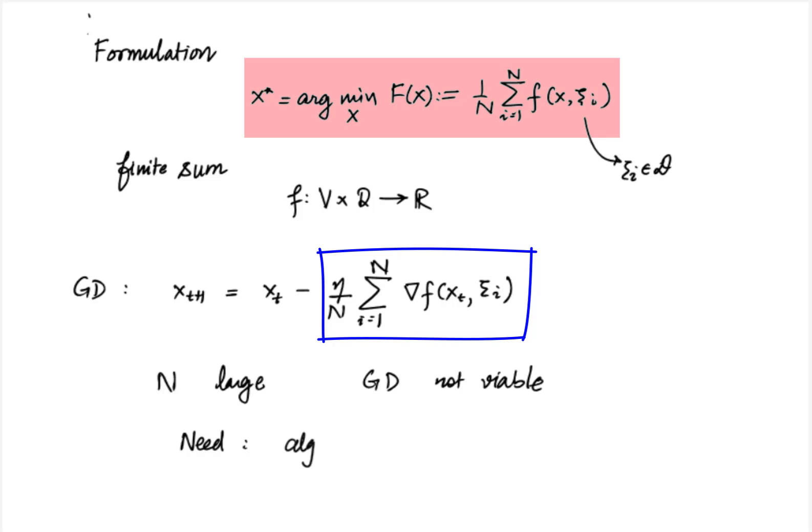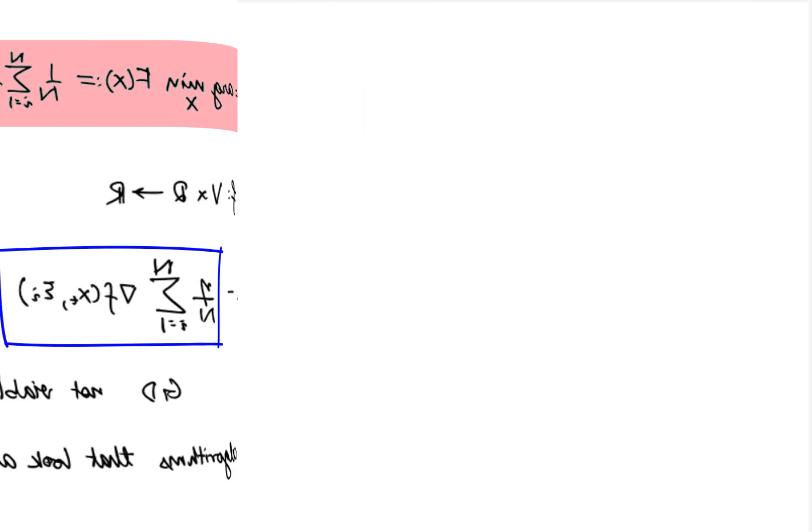So the complication then requires us to look beyond gradient descent and its variants. In particular we want algorithms that do not require us to look at every summand and instead look at maybe one of the summand operations per iteration in this objective function.